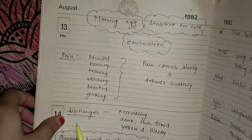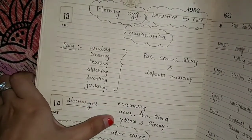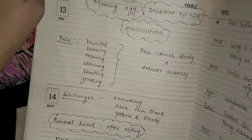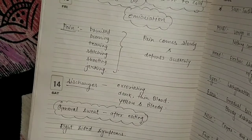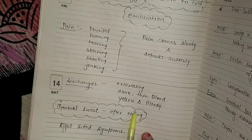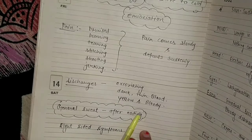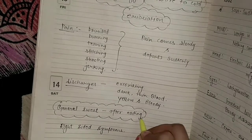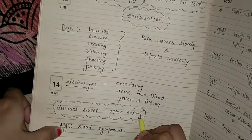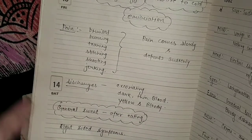The discharges are excoriating, dark, thin blood, yellow and bloody. A general symptom is sweat after eating. We have different medicines; we have to ask the patient whether sweat occurs before, during, or after eating. Sweat after eating points to Sulfuric Acid. The symptoms are right-sided — it is a right-sided medicine.